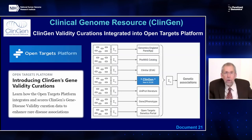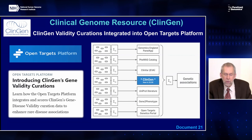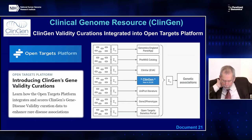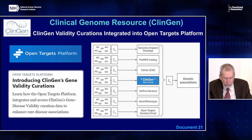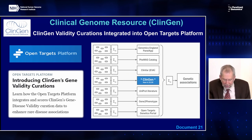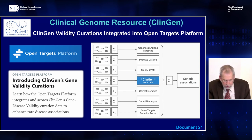The Clinical Genome Resource, or ClinGen, evaluates and disseminates information about the clinical relevance of genes and genomic variants for use in precision medicine and research. The latest release of the OpenTargets platform includes ClinGen as a source of evidence for genetic associations. OpenTargets is a multi-year public-private partnership aiming to assist users in identifying and prioritizing potential drug targets associated with disease. The integration of ClinGen has added 1,055 unique target-disease associations, helping the platform build new associations and strengthen existing ones.